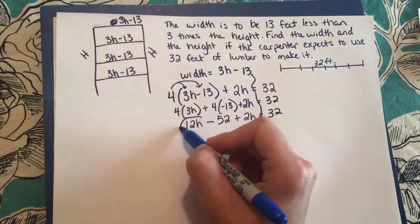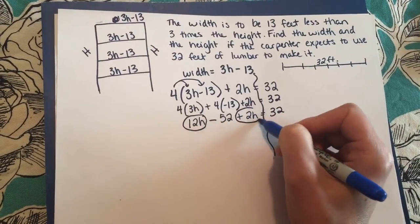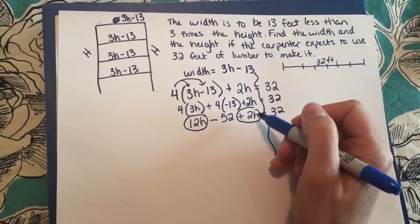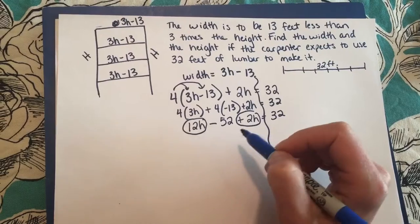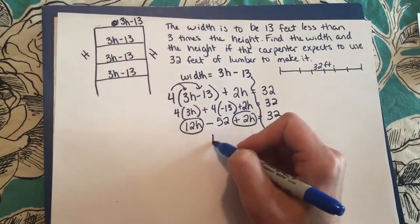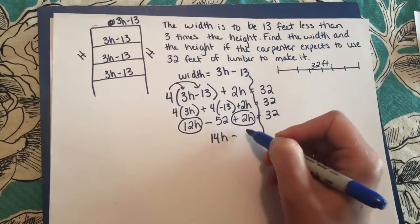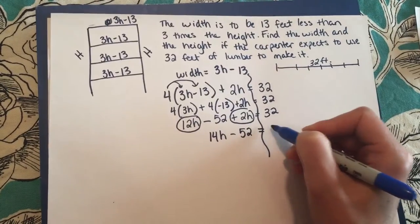Now I can see here I have some h's so I'm going to go ahead and combine those. I have a 12h and a positive 2h. I don't need to do the opposite since they're on the same side of the equation. So I now have 14h minus 52 equals 32.